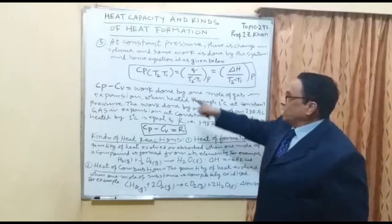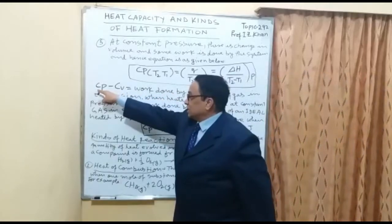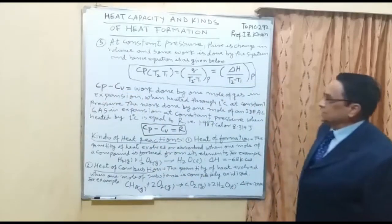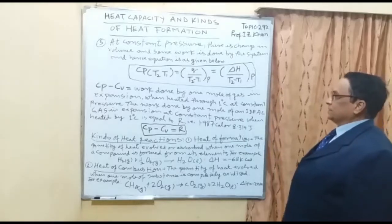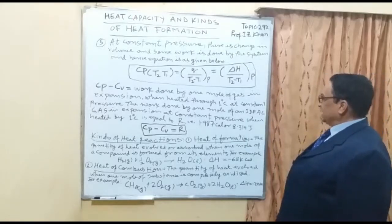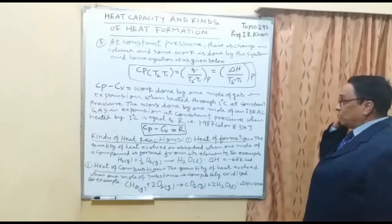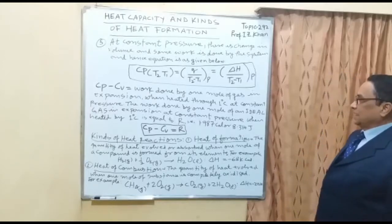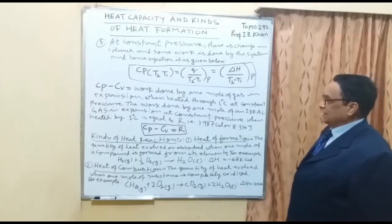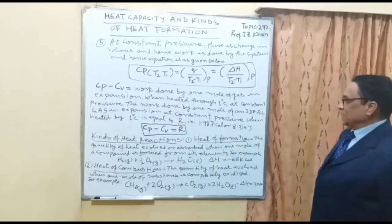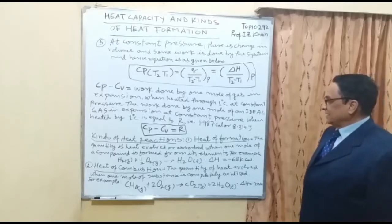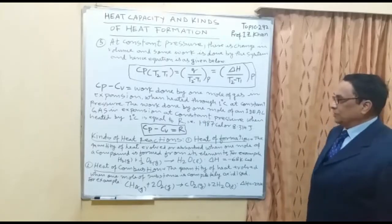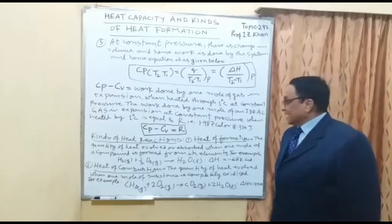When you combine the two equations — CP for constant pressure and CV for constant volume — the work done by one mole of gas in expansion when heated through one degree centigrade at constant pressure equals R. So R equals 1.987 calories or 8.314 joules. Therefore, CP minus CV equals R, where R is a constant.